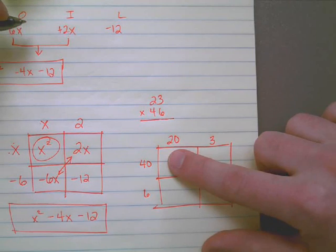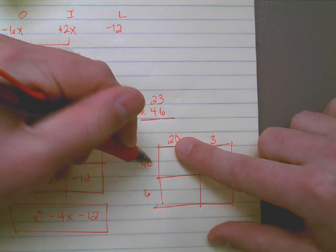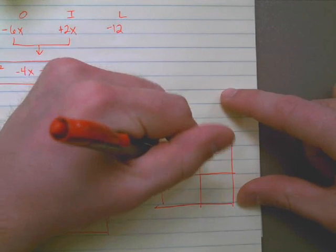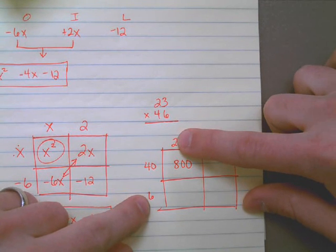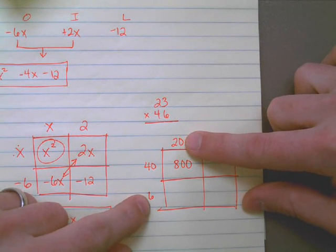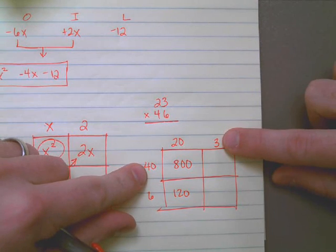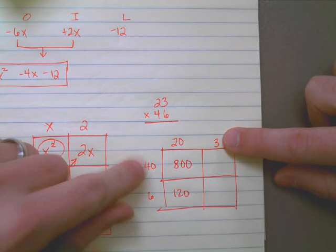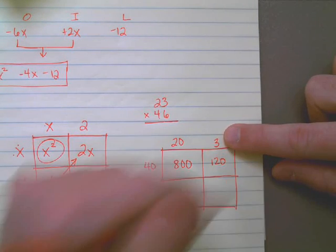Now I can go through and I can say 20 times 40, well that's 2 times 4 which is 8, and then I have two more zeros at the end, that's 800. 20 times 6 is the same thing as 2 times 6 which is 12 with an extra 0 at the end, so that is 120. 40 times 3 is the same thing as 4 times 3 which is 12 with an extra 0 at the end. 6 times 3 is 18.